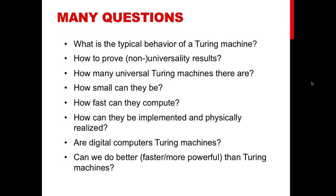One can start asking all sorts of interesting questions, such as: what is the typical behavior of a Turing machine? Is there anything like a typical behavior? How to prove non-universality results — given a Turing machine, can I prove it is universal or not? How many universal Turing machines are there? How small can they be? How fast can they compute? How can they be implemented and physically realized? Are digital computers Turing machines? Can we do better, faster, more powerful than Turing machines? Each of these questions deserves a full lecture by itself, but let me quickly try to cover a couple of them in the next slides, because it helps convey the value of the Turing machine model as some sort of standard.